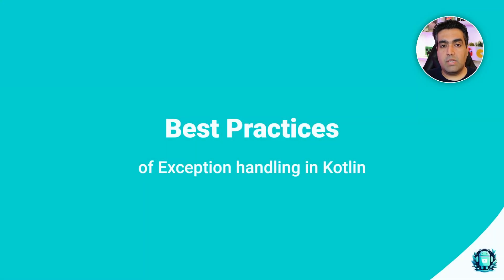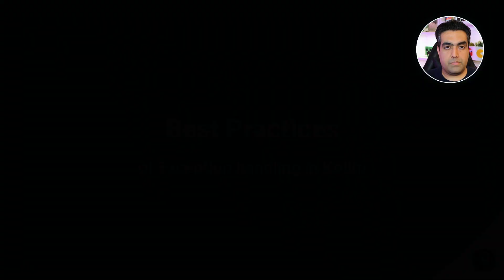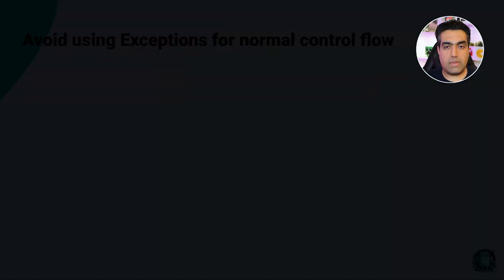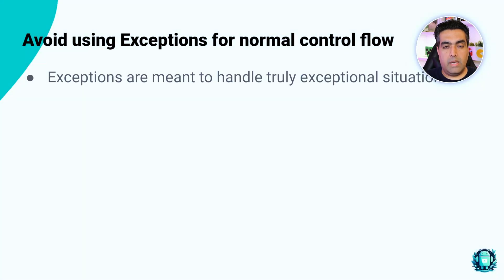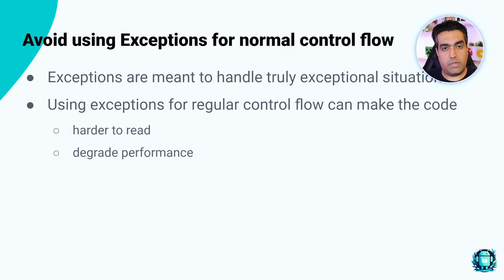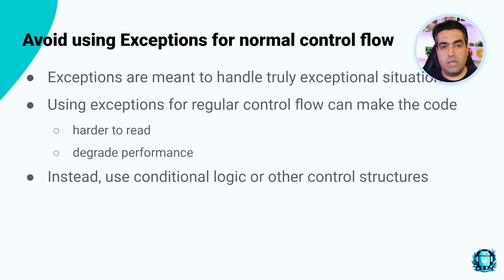After talking about basics, we can talk about some exception handling best practices. Number one: avoid using exceptions for normal control flow. Exceptions in Kotlin are meant to handle truly exceptional situations, not to manage routine tasks. Using exceptions for regular control flow can make the code harder to read and degrade performance. Instead, use conditional logic or other control structures.